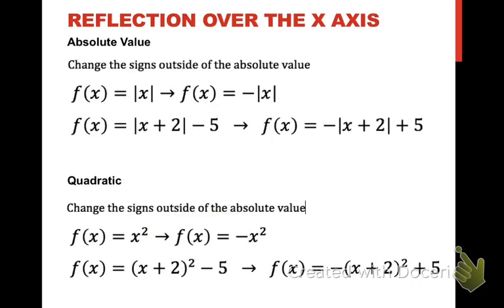For absolute value, all I'm doing is making the outside, I'm changing all the outside signs. So in this first example here with my parent function, I just make this outside a negative. In the second example here, if I had more things going on, say |x + 2| - 5, I would just change the sign of my absolute value out here, and I would change the sign of the 5. So notice over here, I have a negative absolute value and a positive 5 now. So I'm changing all of the signs that are on the outside of the absolute value. I didn't do anything with the inside.